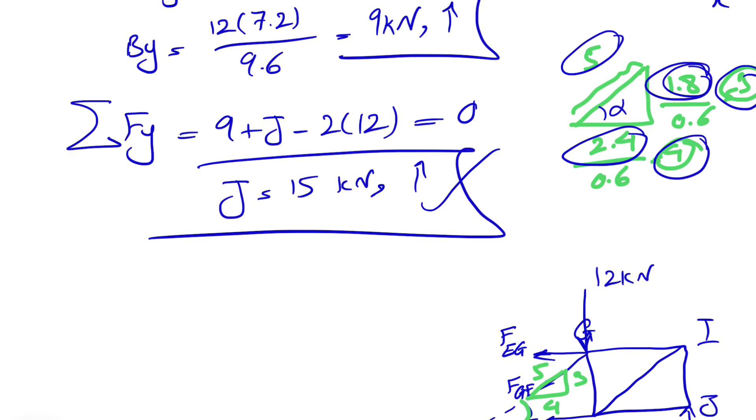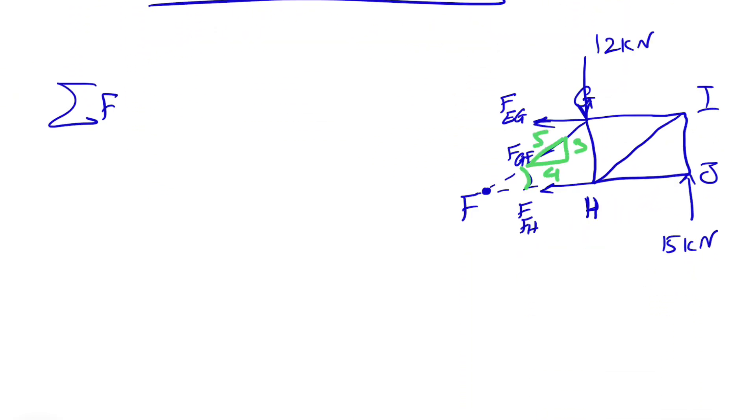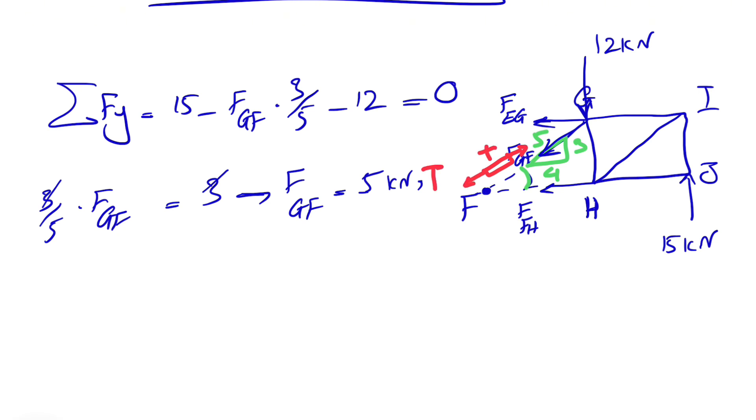If we divide 1.8 by 0.6, we'll get to that. So it's easy and faster to find the hypotenuse. So now we can do the FY in here. We have 15 minus, as we can see, the Y component of FGF is downward. So we have a minus sign. FGF times 3 over 5. That's going to give us the Y component. Minus 12 is equal to 0. So FGF or 3 over 5 times FGF would be 3. 15 minus 12, which is 3. You can cancel out 3. And FGF in here would be 5 kilonewton. We did not get any negative sign. That shows the direction was correct. Let's just figure out if the member is in tension or compression. So the member is in here. The force has to be in the opposite direction of that. So the member is in tension.